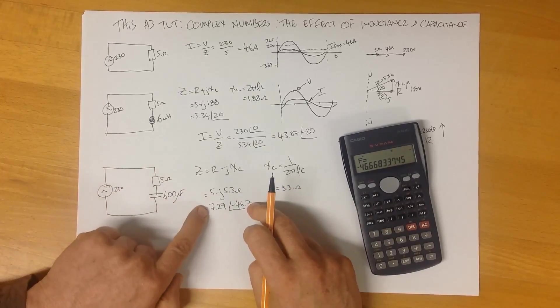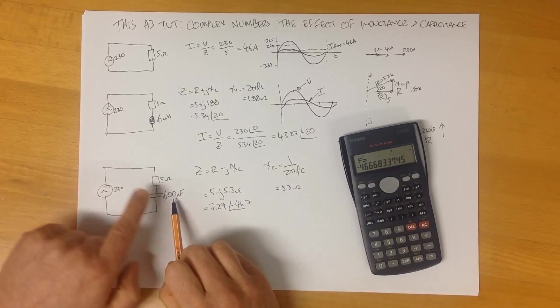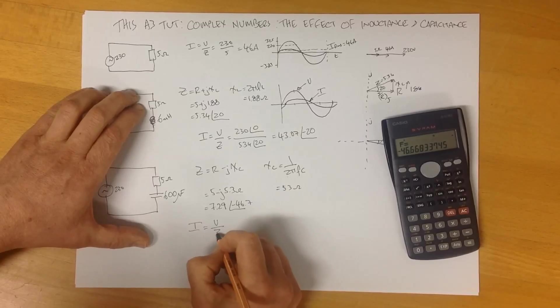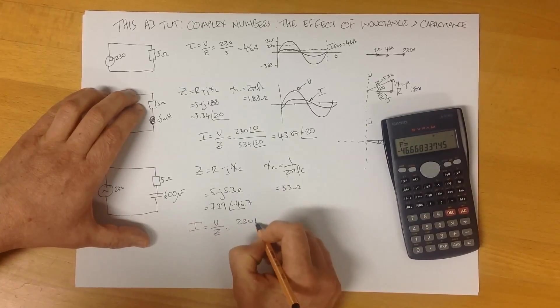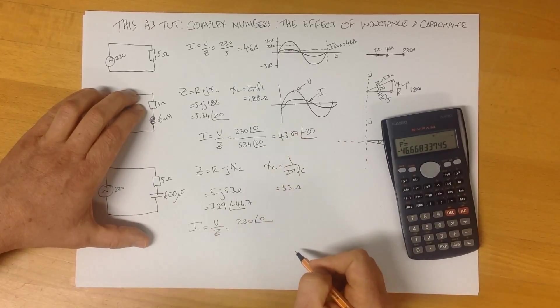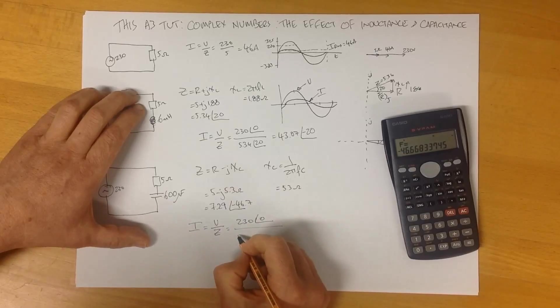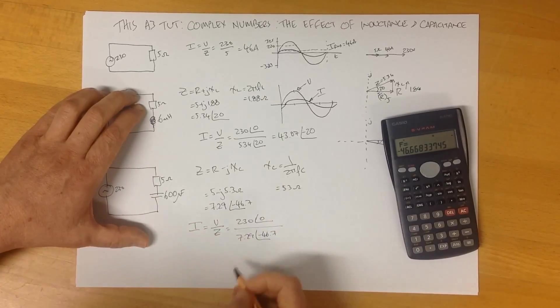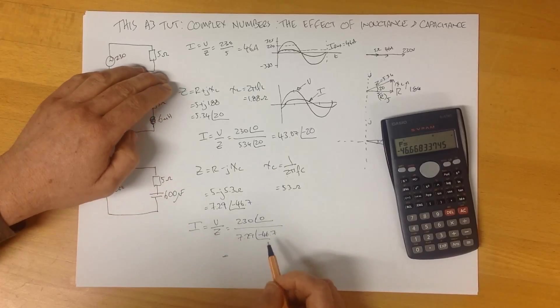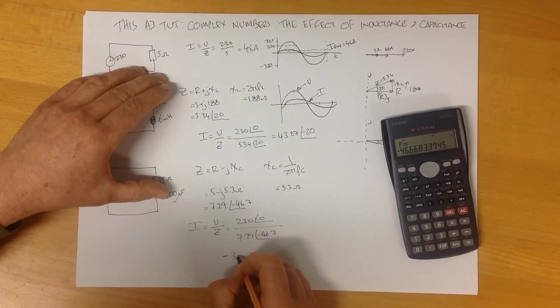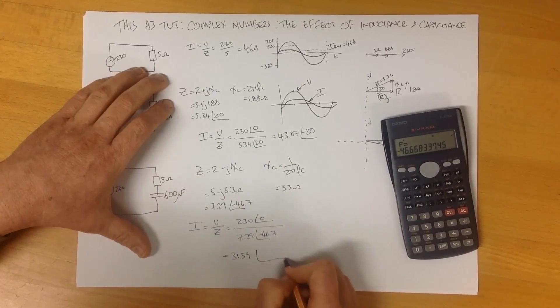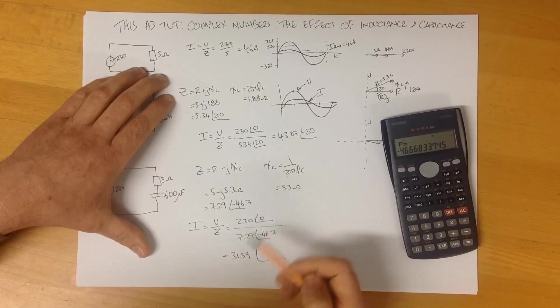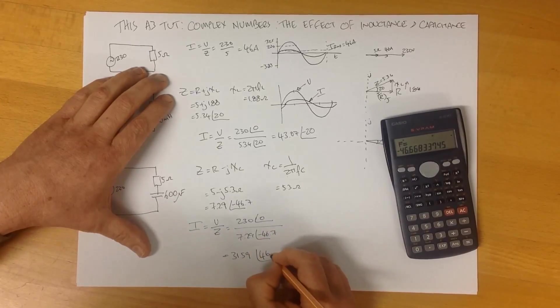We can therefore calculate current. Again, we're assuming, taking our voltage is having a zero volt reference over our impedance, 7.29 minus 46.7. So our total current therefore resolves to be that divided by that, which gives us 31.59. Zero minus minus 46, which is effectively saying zero plus 46 because the two negatives cancel out. Zero minus minus 46, 46.7.